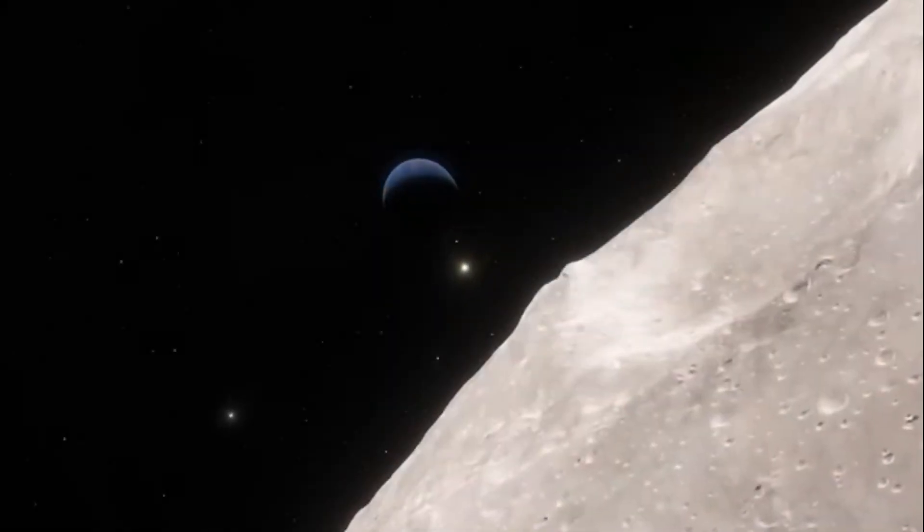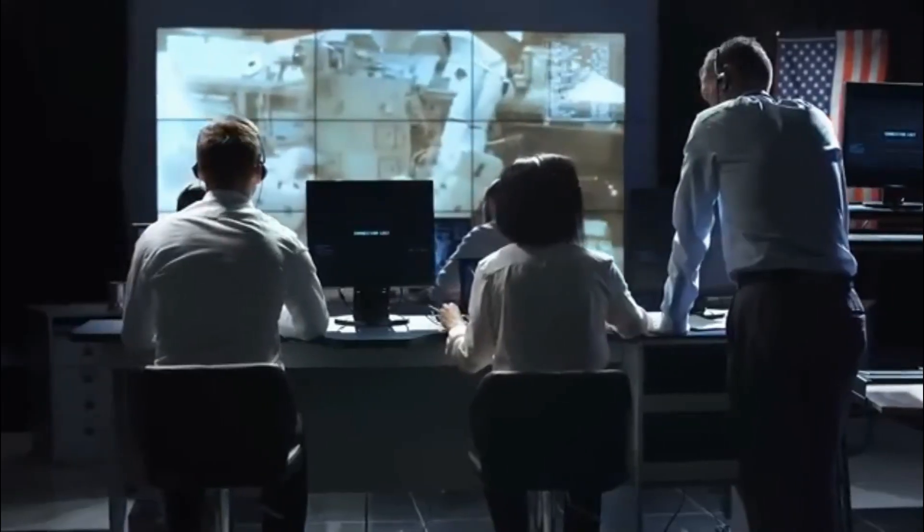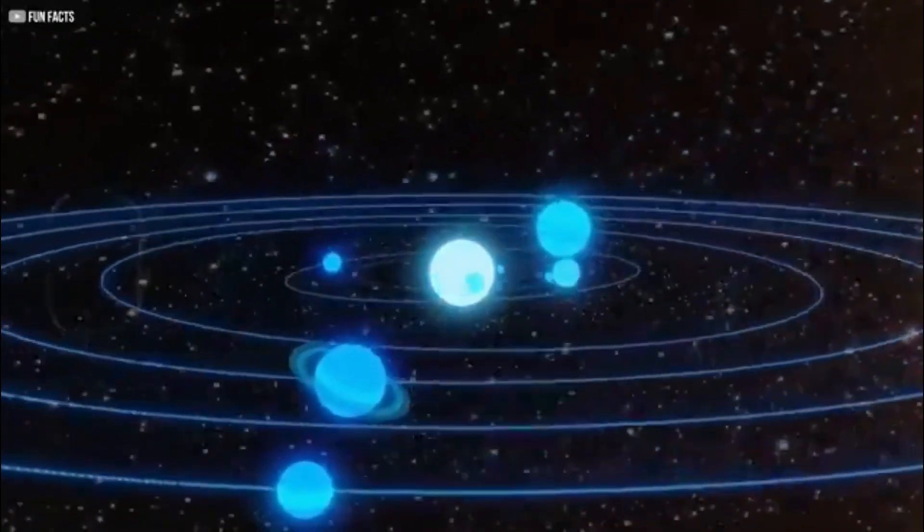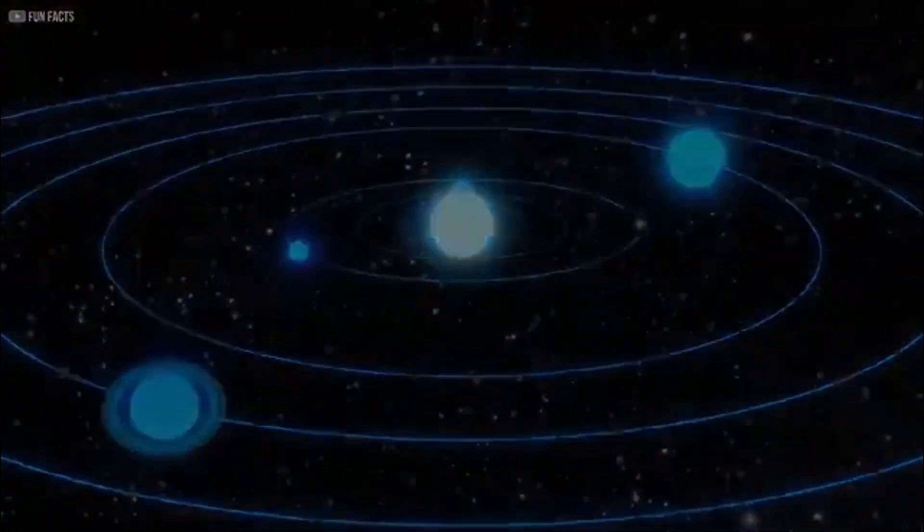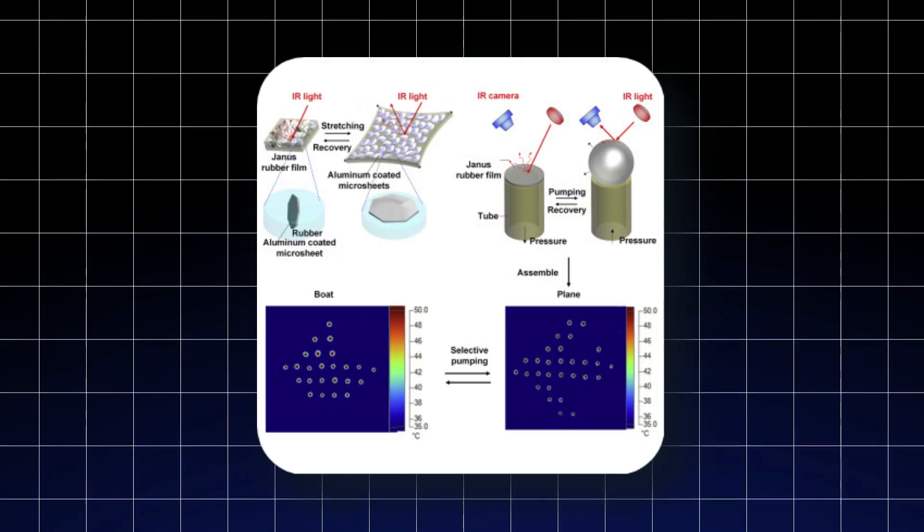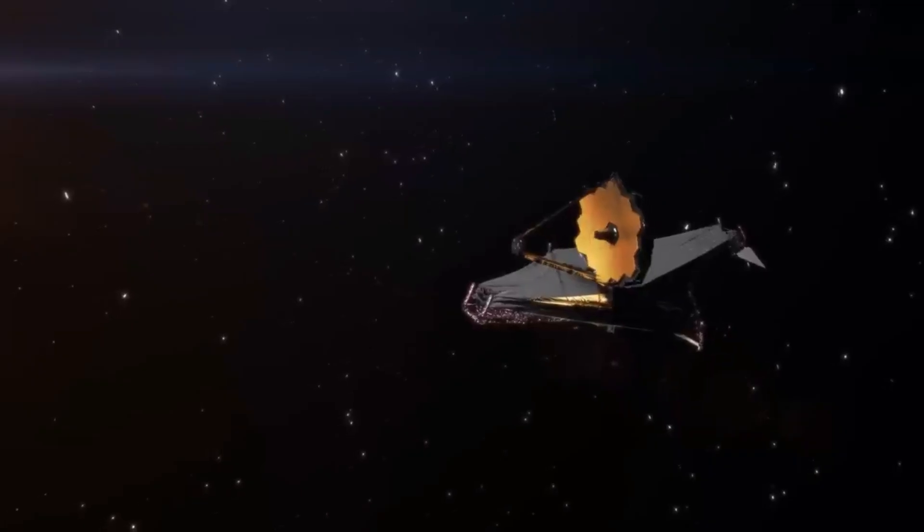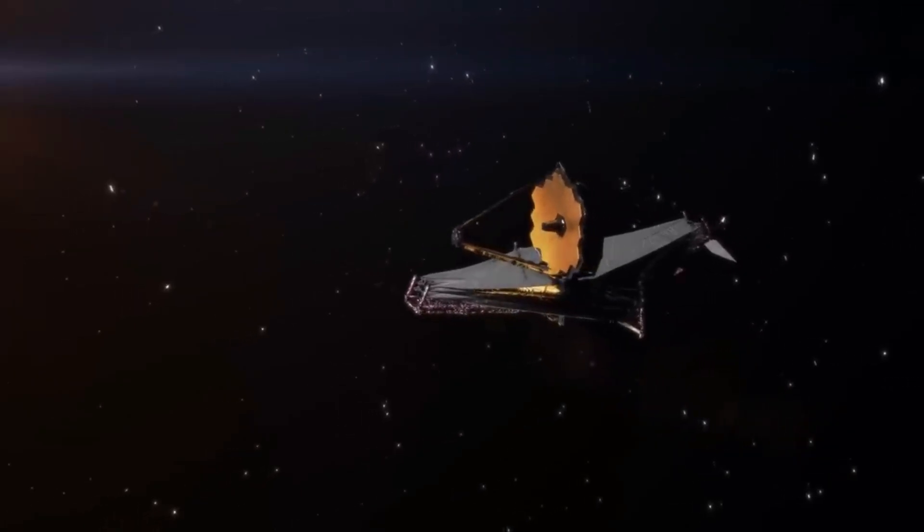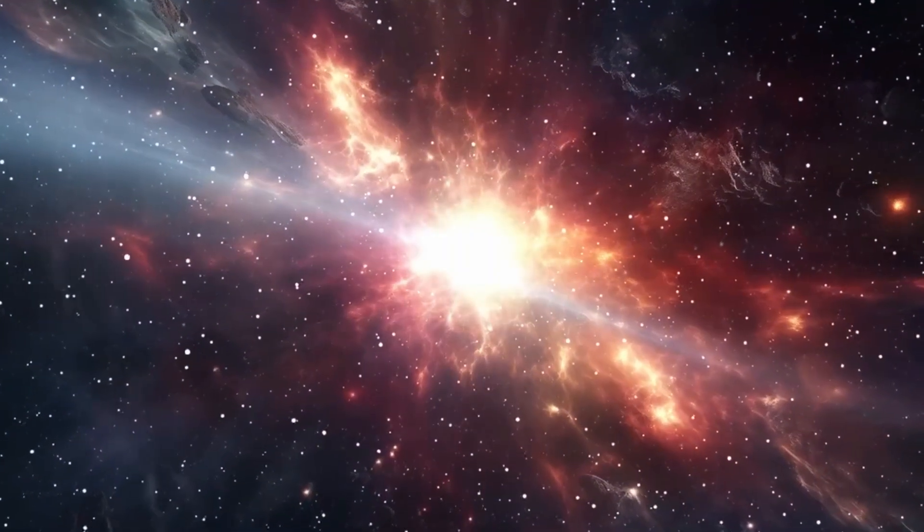This breakthrough system didn't just filter through the noise, it understood the noise, dissecting it with a level of contextual inference that mimicked intuitive thought processes. The evidence began with minute distortions in the infrared light patterns coming from the Kuiper Belt, subtle oscillations in the background distribution of reflected light. Individually, they were insignificant, the sort of deviations routinely discarded in traditional analyses.